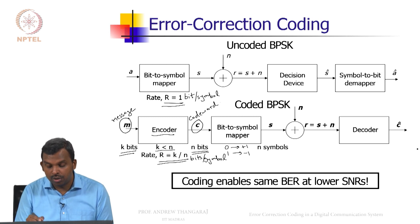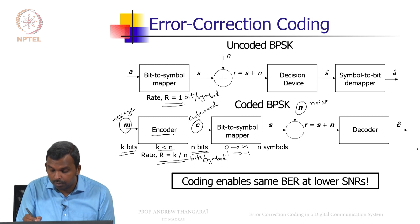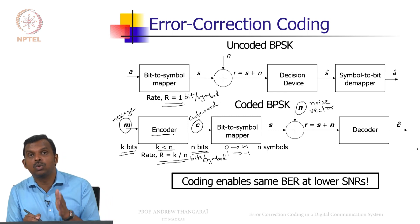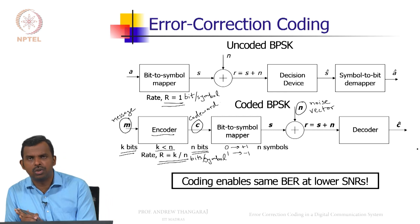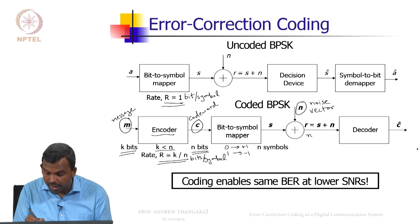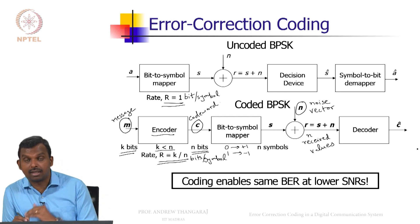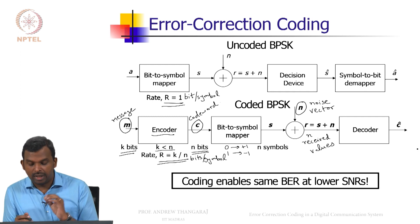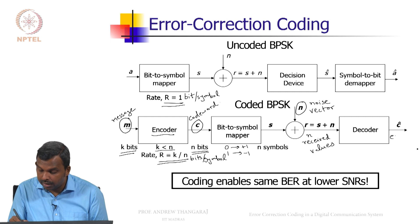This goes through the AWGN channel and you have a noise vector here. It will have N values of noise. They are all independent Gaussian, and you will have N received values. Now you have the task of building a decoder which will take these N received values and put out estimated codeword which is N bits.